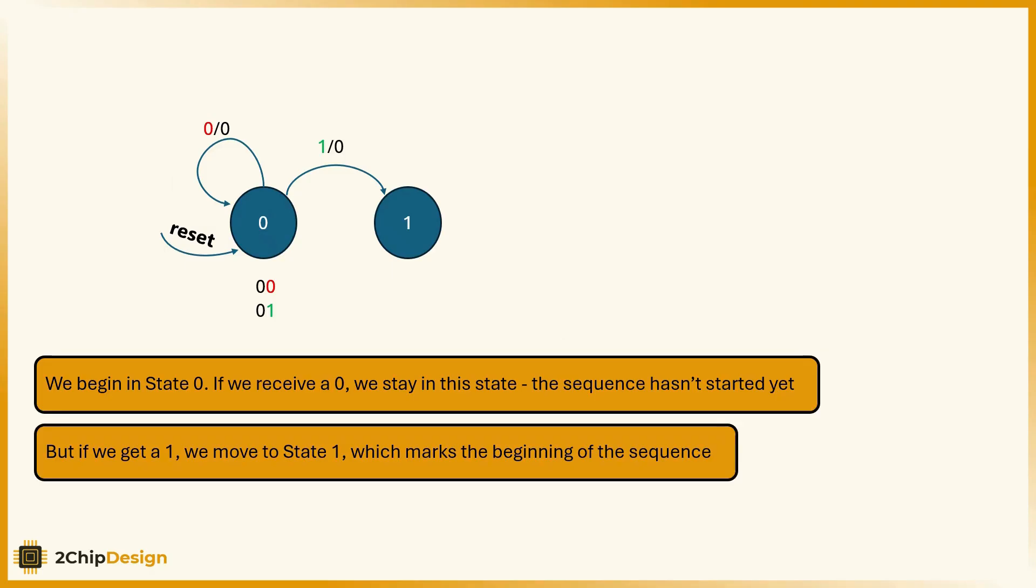We begin in state 0. If you receive a 0, we stay in this state. The sequence hasn't started yet. But if we get a 1, we move to state 1 which marks the beginning of the sequence.